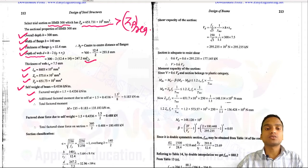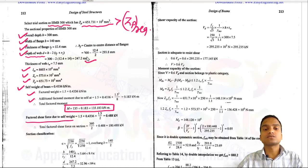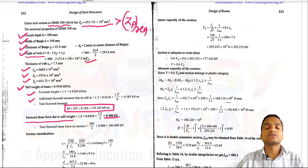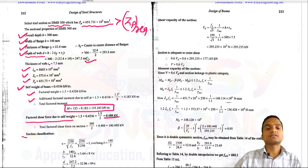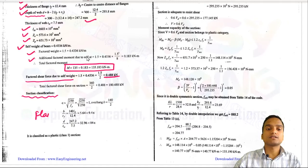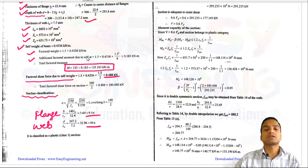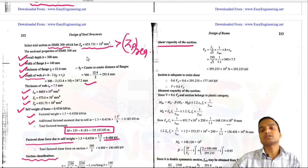Self-weight is calculated, factored, and additional moment due to self-weight is added. Total factored moment is 135.183 kN·m. Factored shear force from point load is W/2, plus contribution from self-weight. Section classification checks give b/tf < 9.4 epsilon and d/tw < 84 epsilon, confirming ISMB 300 is also a plastic section. Shear capacity VD comes out to be 295 kN.